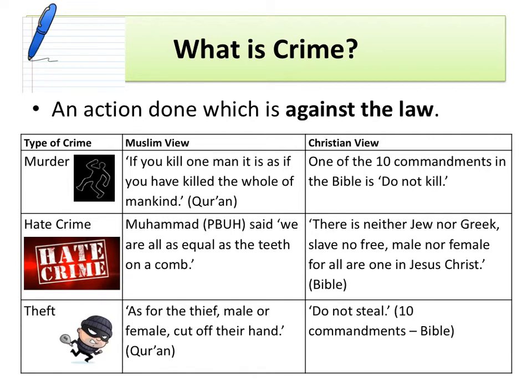This suggests that everybody is absolutely equal because all the teeth on a comb are absolutely equal. The second is a Christian view from St Paul: there is neither Jew nor Greek, slave nor free, male nor female, for all are one in Jesus Christ. This gives a very clear suggestion that every Christian is absolutely equal in the eyes of God.